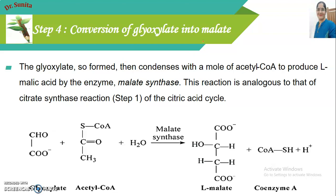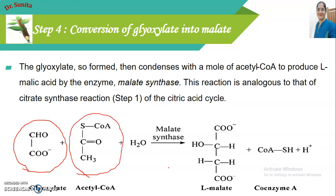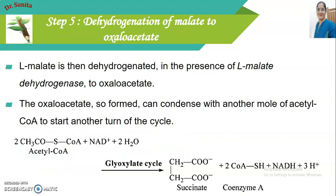The fourth step is conversion of glyoxylate into malate. Glyoxylate condenses with another Acetyl Coenzyme A molecule to form malate with the help of the enzyme malate synthase. The fifth step is dehydrogenation of malate to oxaloacetate — similar to the eighth reaction of the Krebs cycle — catalyzed by malate dehydrogenase. The oxaloacetate formed then condenses again to continue the cycle.